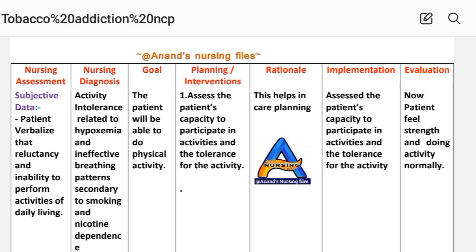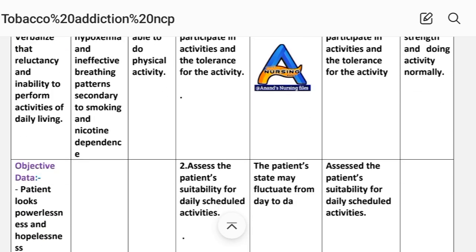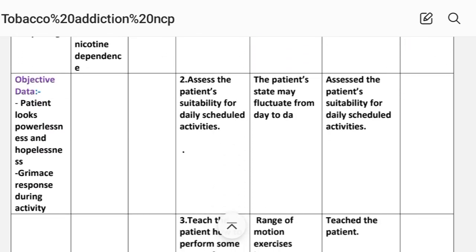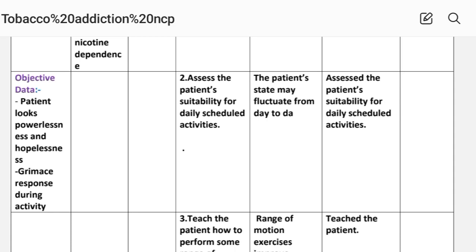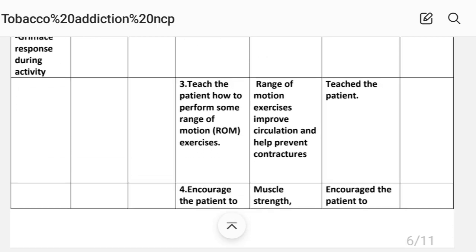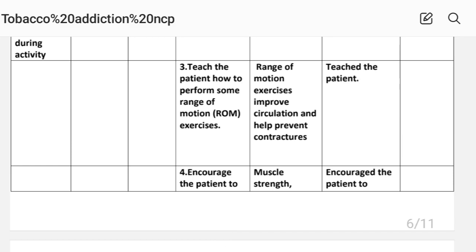Intervention, first: assess the patient's capacity to participate in activities and the tolerance for the activity. Rationale: this helps in care planning. Implementation: assess the patient's capacity to participate in activities and tolerance for the activity. Number two: assess the patient's suitability for a daily scheduled activity. Rationale: the patient's state may fluctuate from day to day. Implementation: assess the patient's suitability for daily scheduled activity.